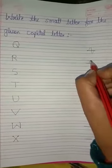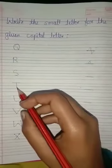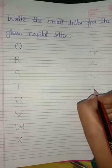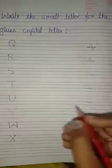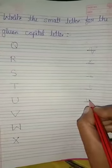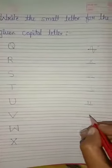Capital S. And this is small S. This is capital letter T. So here we write small letter T. This is capital U. And this is small U. Capital V.